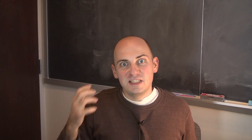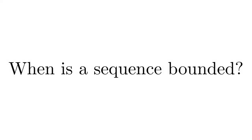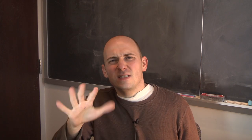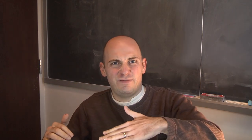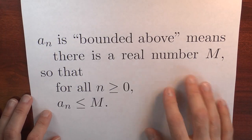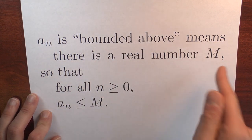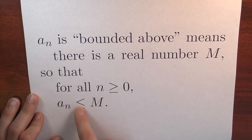Let's control the size of sequences. I want some terminology, some language for us to be able to talk about sequences that don't get too big or don't get too negative. The word we'll be using is bounded. Precisely, to say that a sequence is bounded above means that there's some real number m — that's the bound — so that for any index, that term in the sequence is no bigger than m.